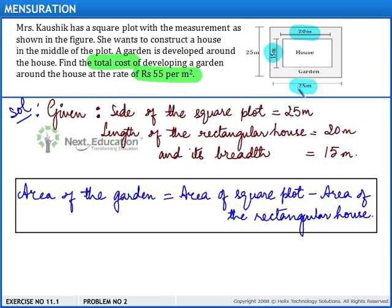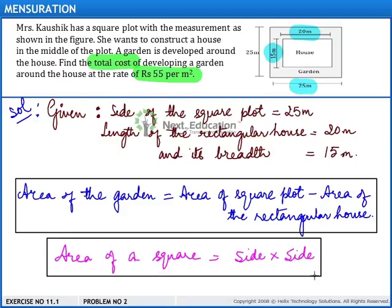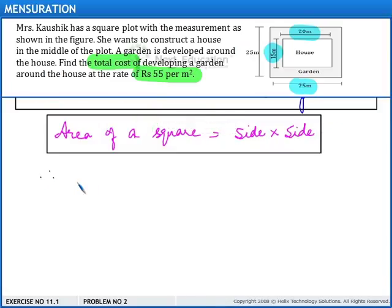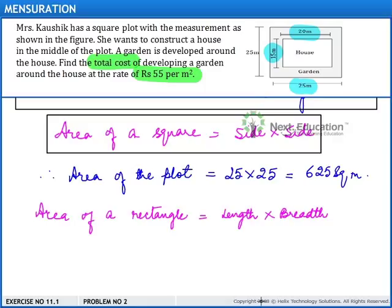First, we find the area of the square plot. Recall that the area of a square is equal to side into side. Using this formula, the side of the plot is 25 meters, therefore 25 multiplied by 25 is equal to 625 square meters.